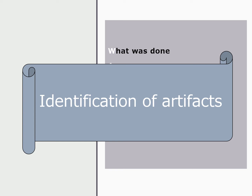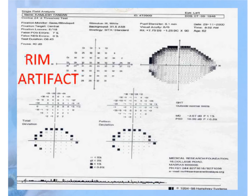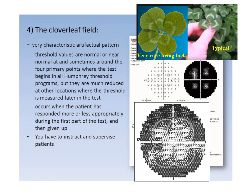Finally, we need to check for artifacts. A rim artifact occurs when the spectacle frame blocks peripheral points, giving zero values in a ring pattern while the center remains normal. The cloverleaf artifact is another pattern — the central part of each quadrant appears fine while the periphery is affected, giving a cloverleaf shape. Rarely, a four-leaf cloverleaf pattern can occur.